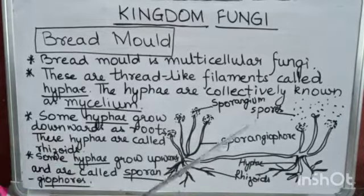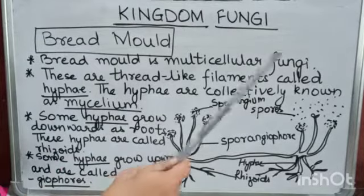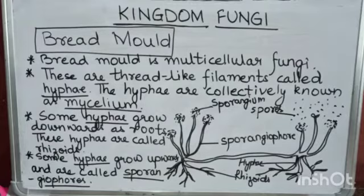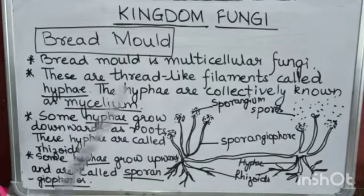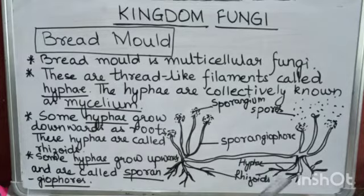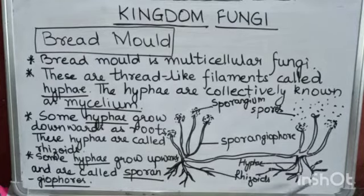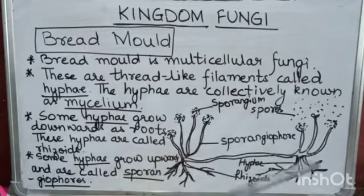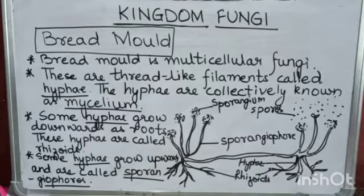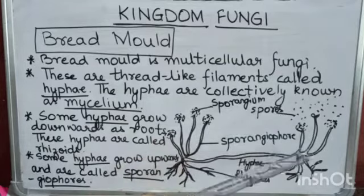Bread mold is multicellular fungi — it has many cells. These cells form thread-like filaments called hyphae. Collectively, these hyphae are known as mycelium. Some hyphae grow downwards like roots — these are called rhizoids. Some hyphae grow upwards.